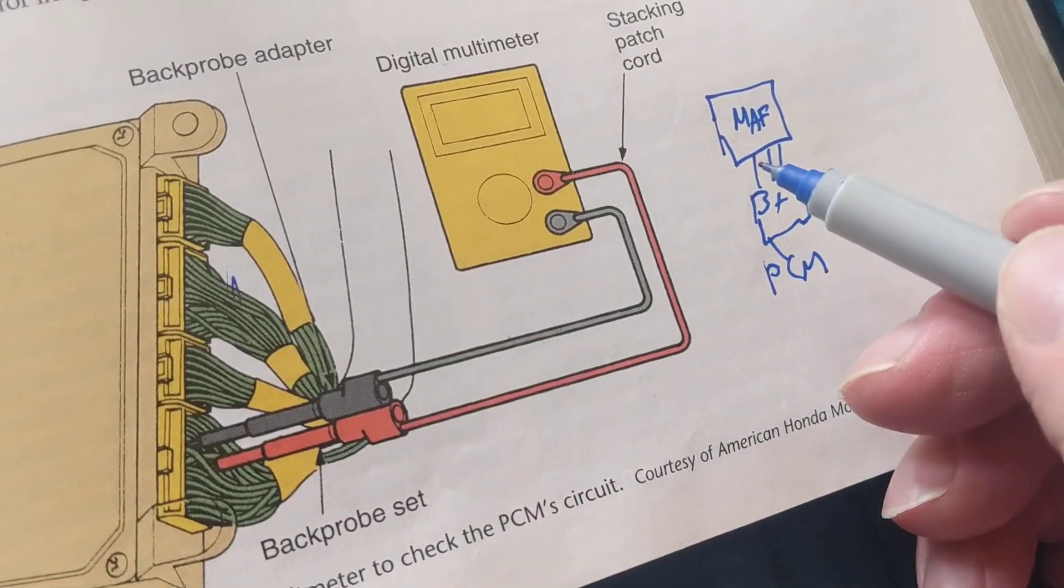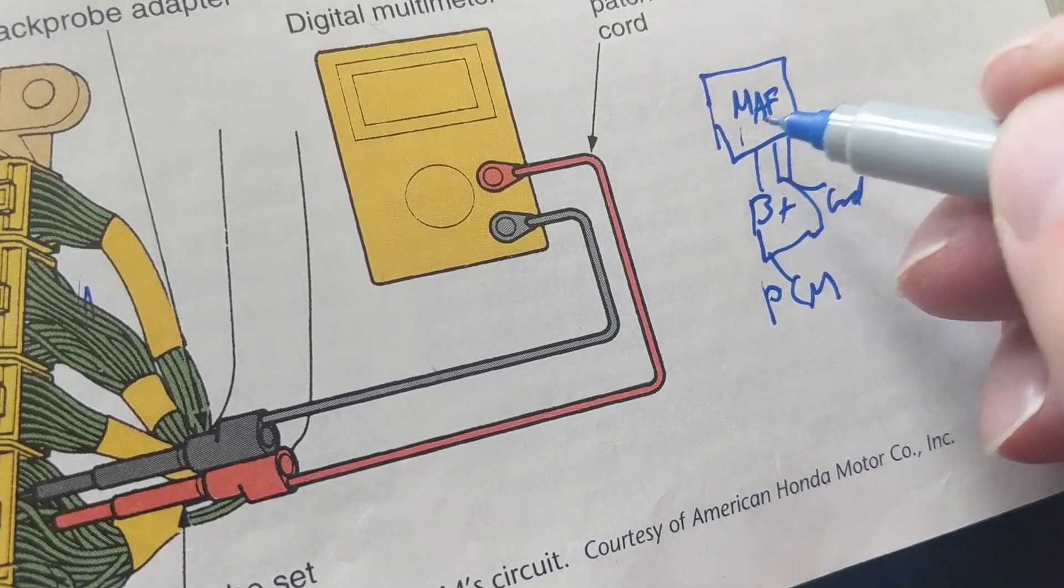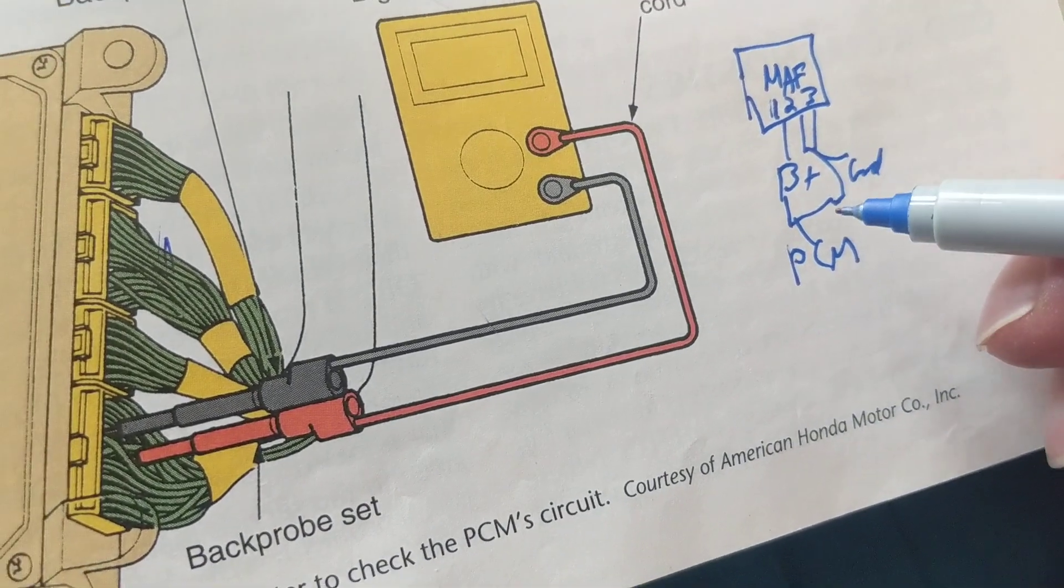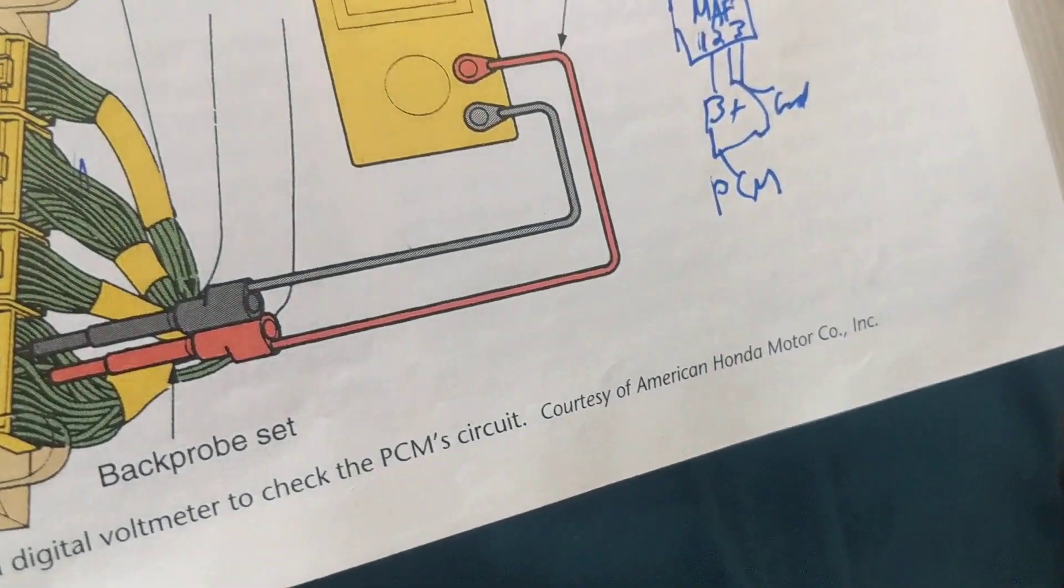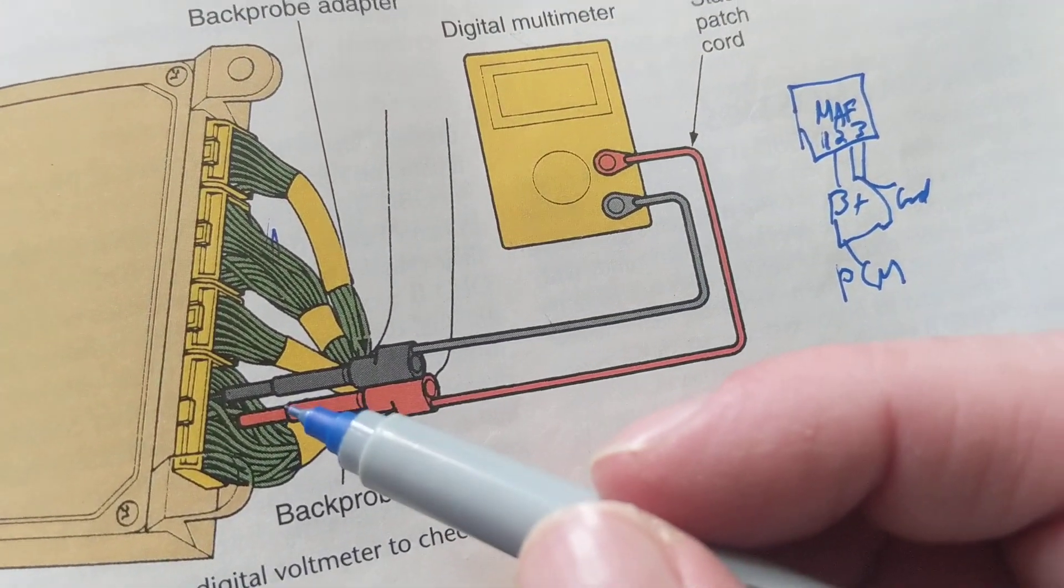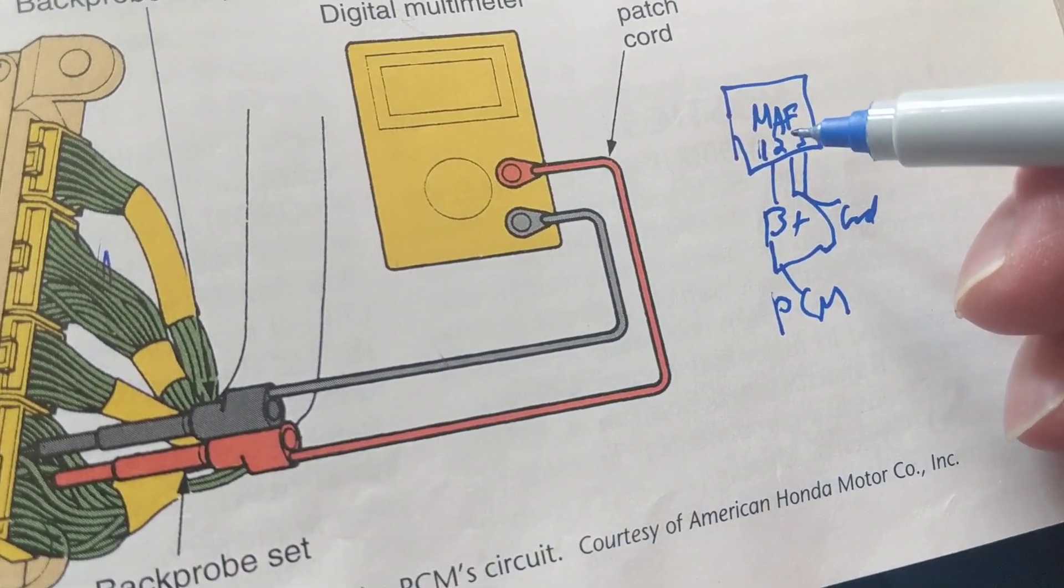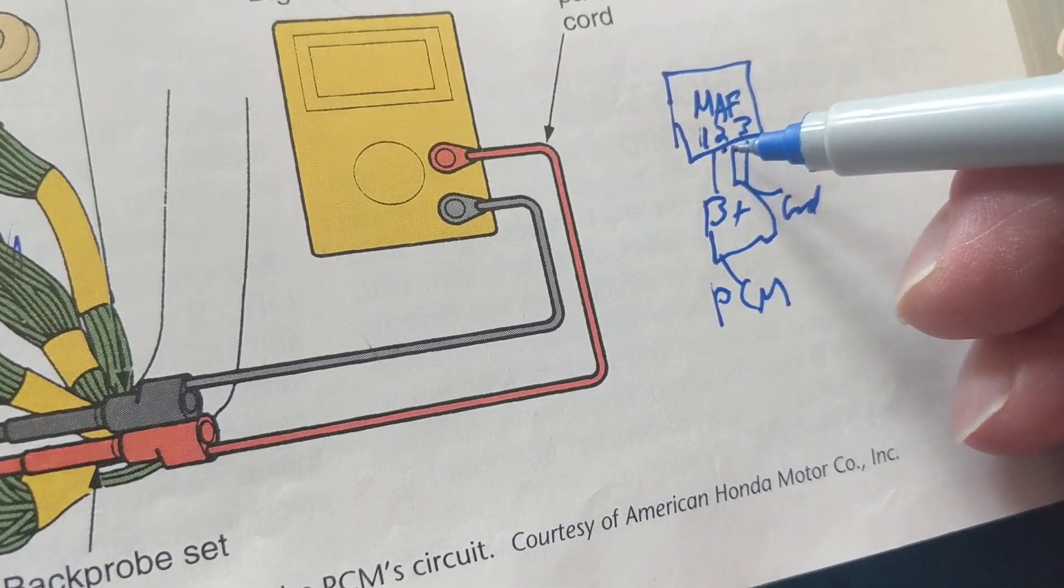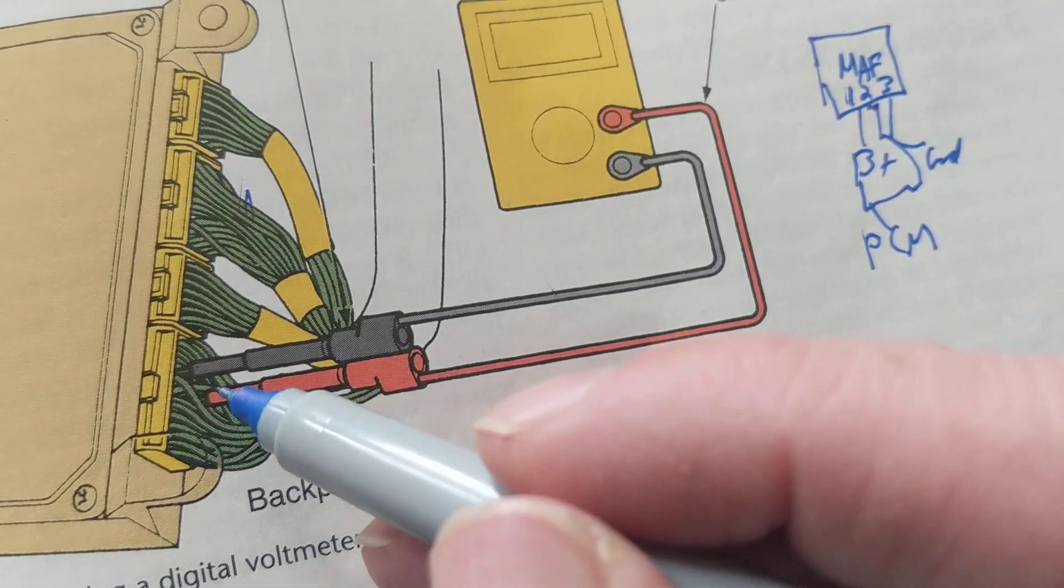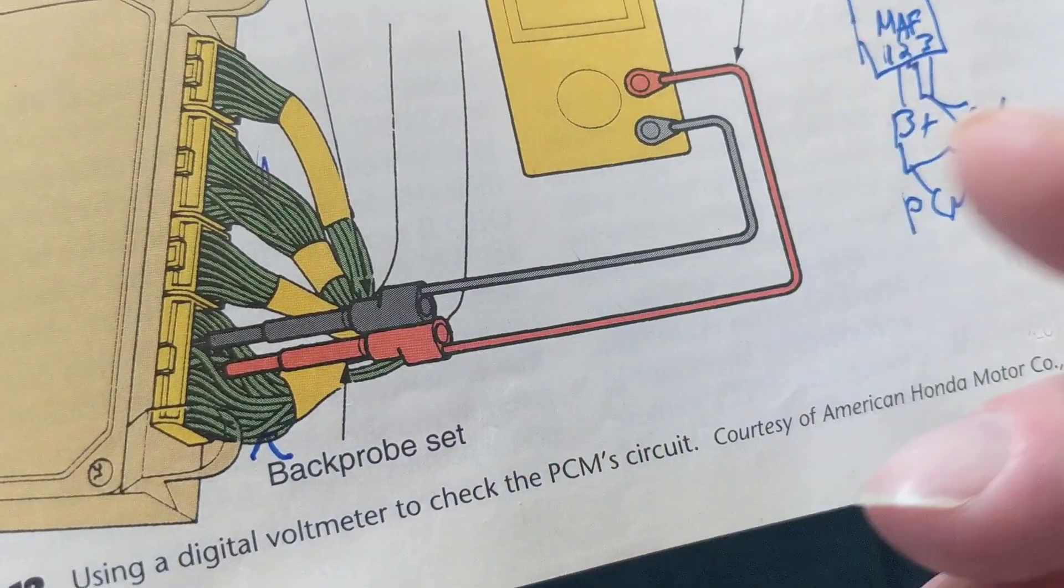Okay, let's say this wire, this signal wire, which is the middle one, we'll say this is one, this is two, and this is pin three. Number two is the one that goes back to the PCM. So that signal is going back to the PCM. Let's say I go to the PCM and I back probe it and I don't see anything. I go to the mass airflow sensor directly to this one to see if I see anything, and I see something. So I see something here, I don't see something over here.